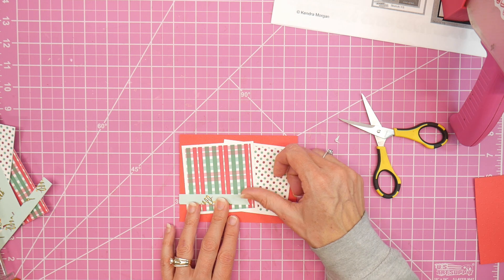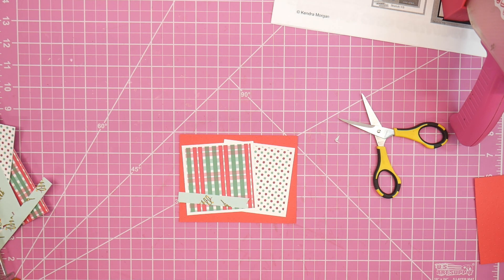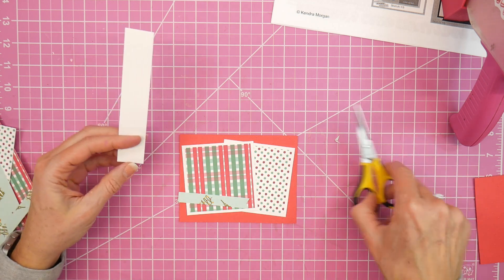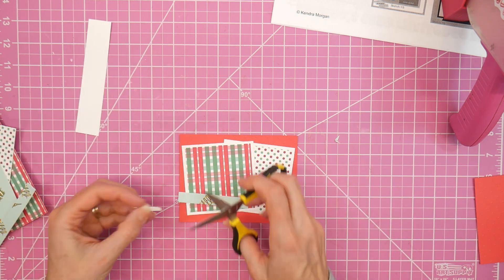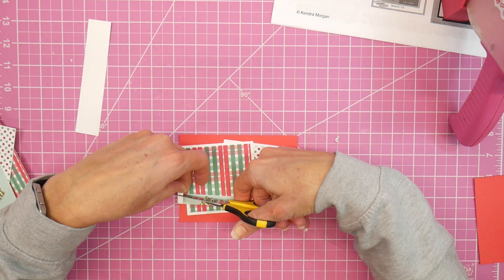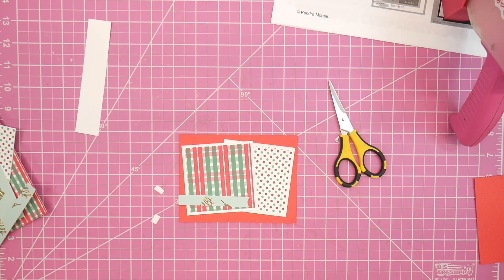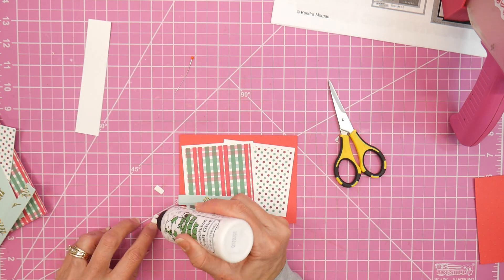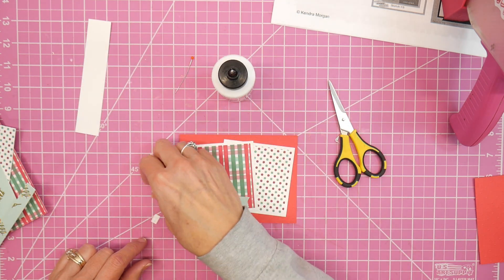I am throwing in that strip - a little strip of the Christmas tree paper. It's what Kendra calls for as the sentiment strip on her sketch, but I'm actually going to put my sentiment on the bigger rectangle that's going to go in the center of the card. So I just decided to bring in that third pattern that I had as more of a decorative strip.